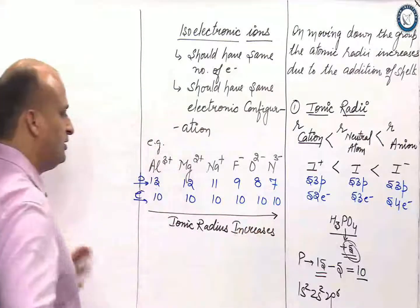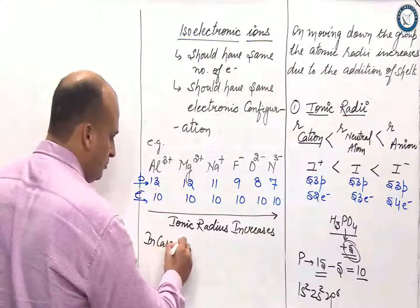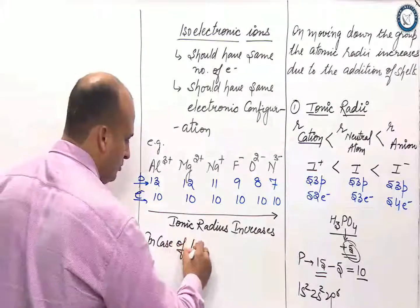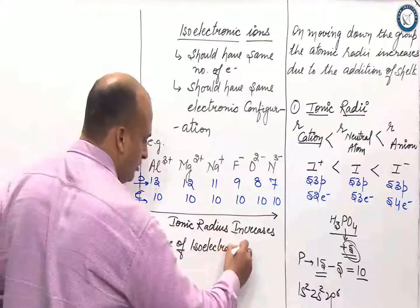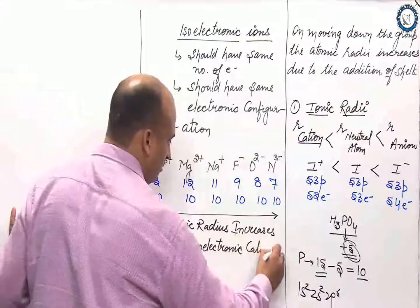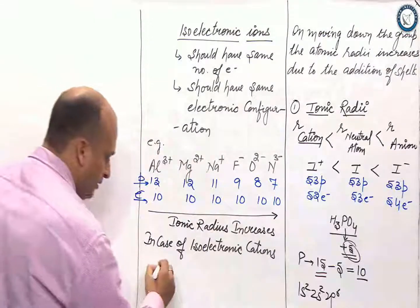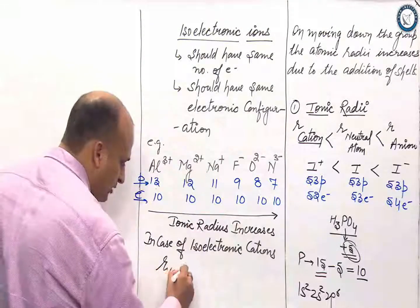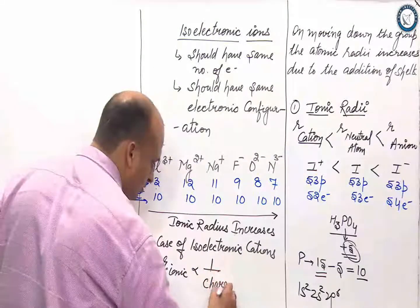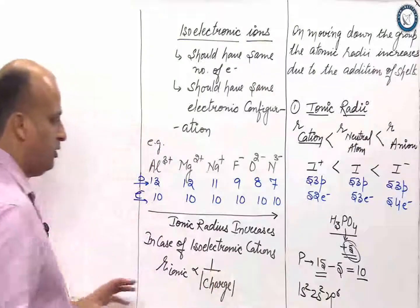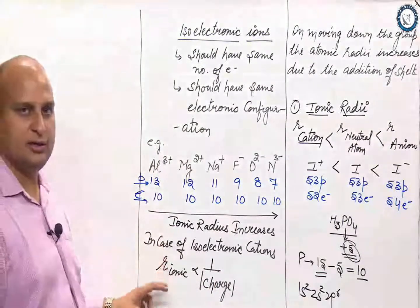There is a simple concept in case of isoelectronic cations. Ionic radius is inversely proportional to charge. Higher the charge, lesser the radius.